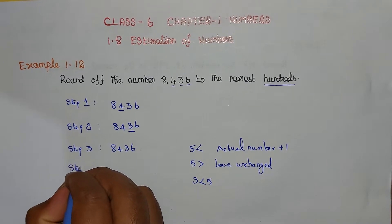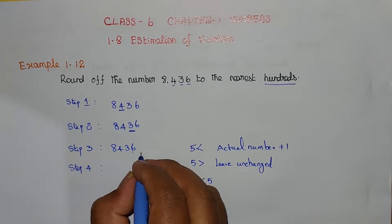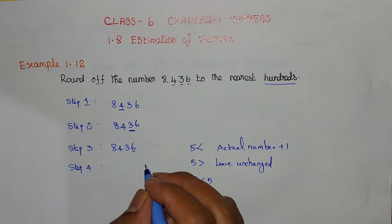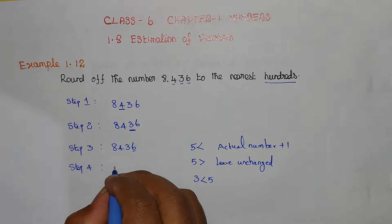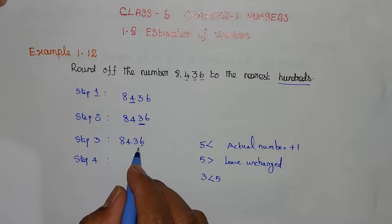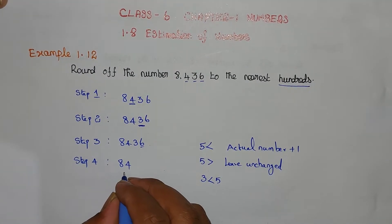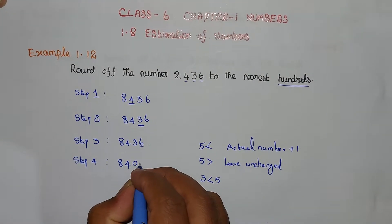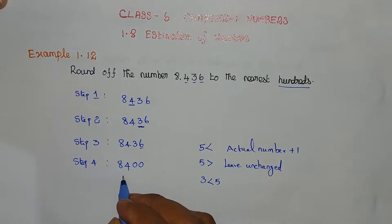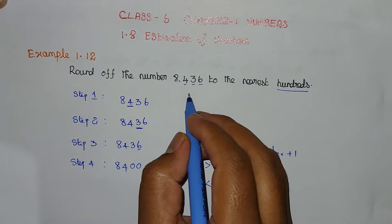Step 4: All the digits to the right of the hundreds place will be replaced with 0. So the answer is 8,400 — that is the nearest 100 value for 8,436.